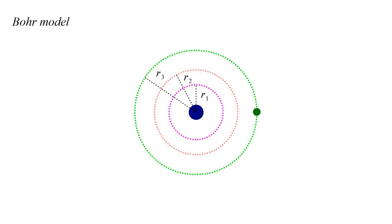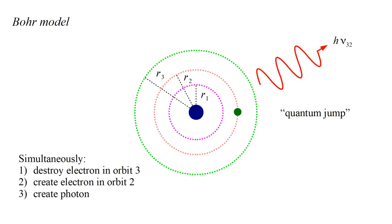For example, in the Bohr model of hydrogen, the electron can only occupy a discrete set of orbits. An electron in the third orbit can suddenly transition to the second orbit with the emission of a photon. We might interpret this as three events occurring simultaneously: destroy an electron in the third orbit, create an electron in the second orbit, and create a photon, with the constraints that total energy and momentum remain constant.